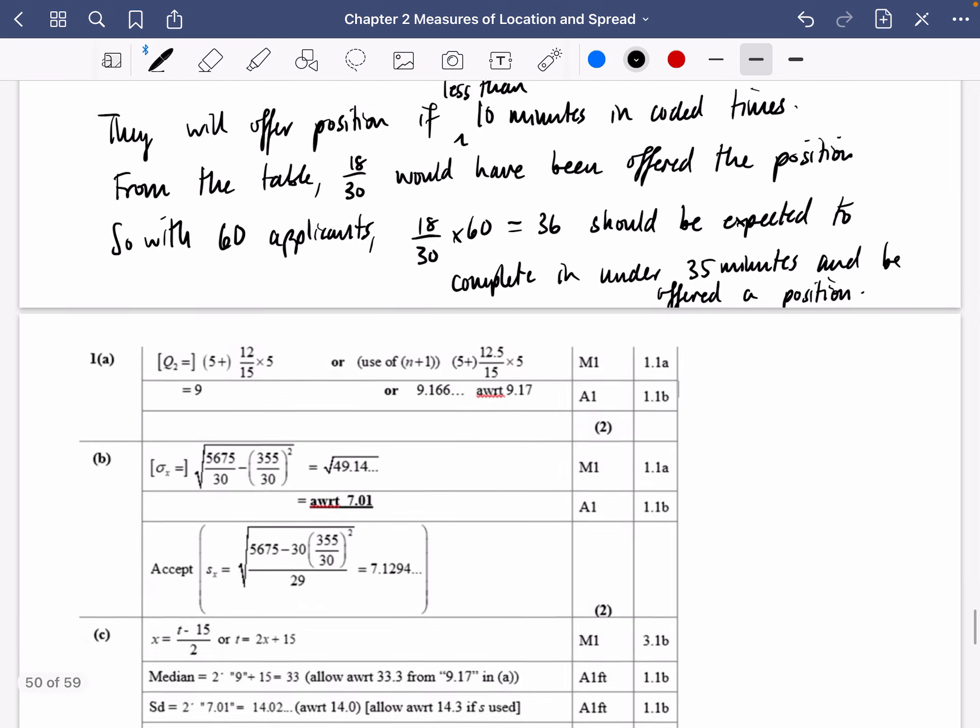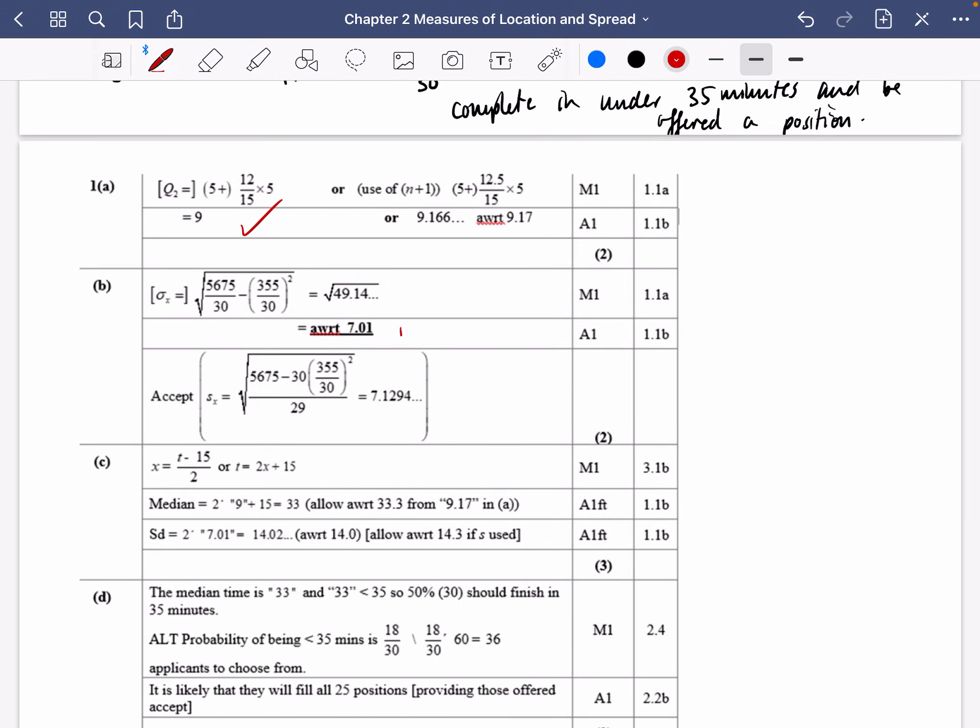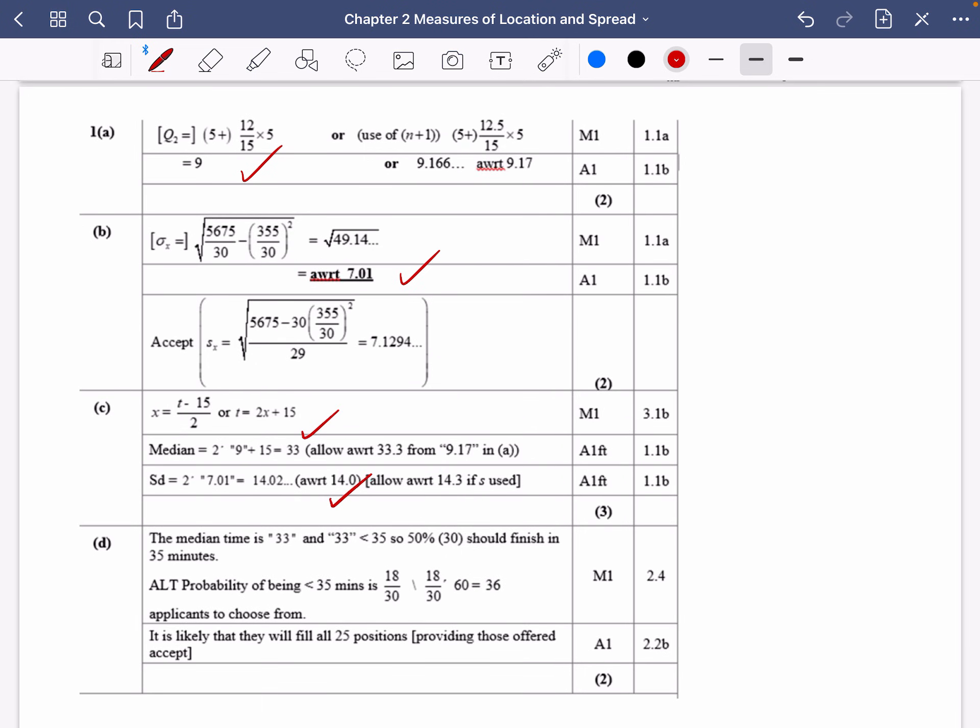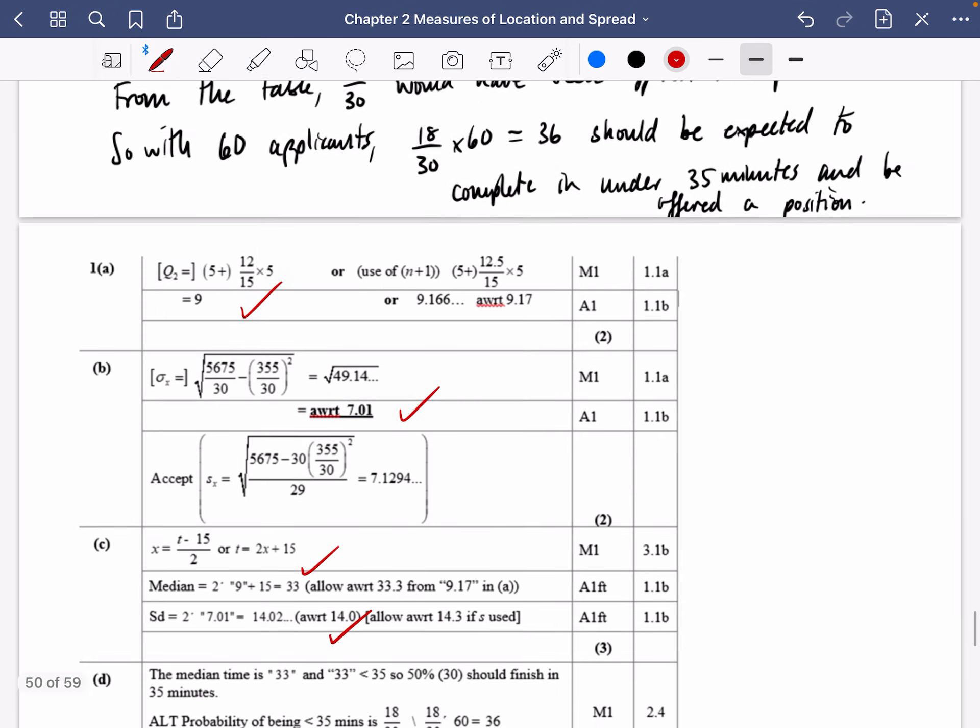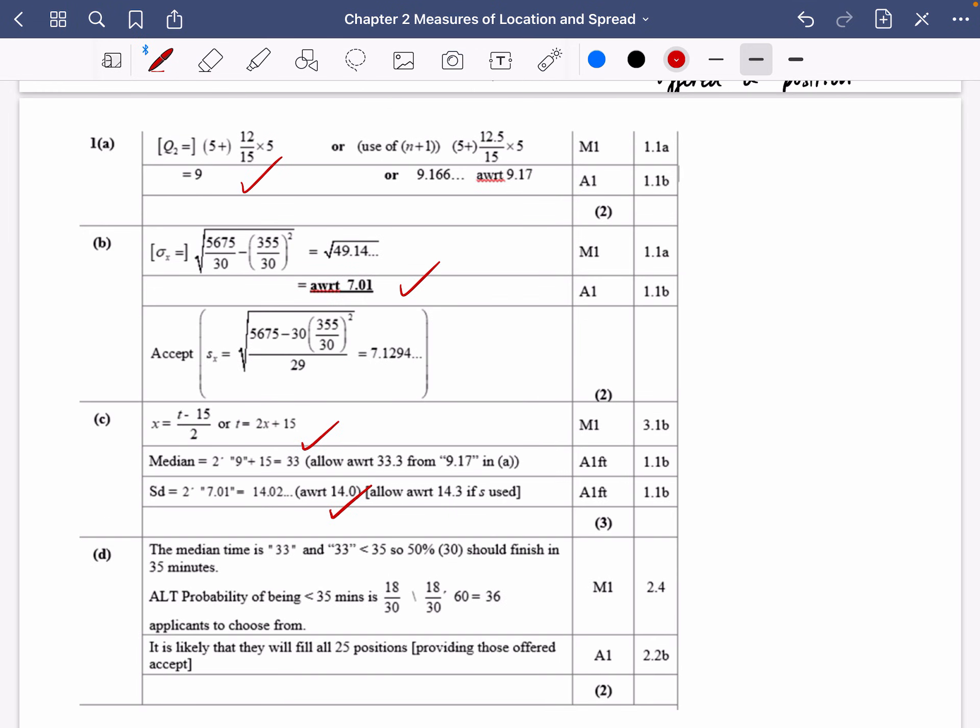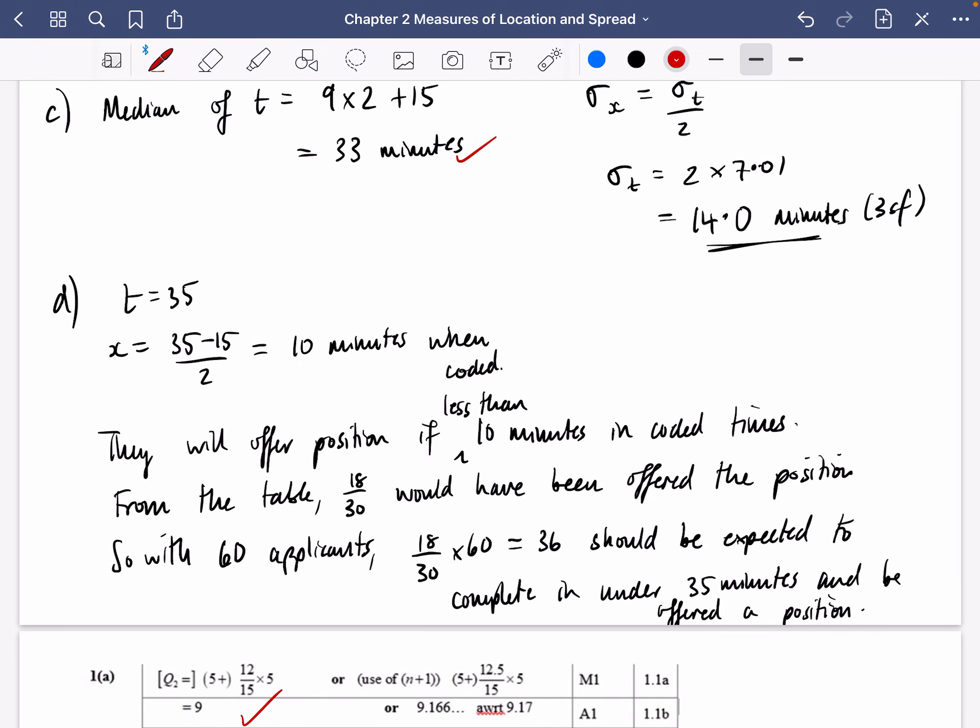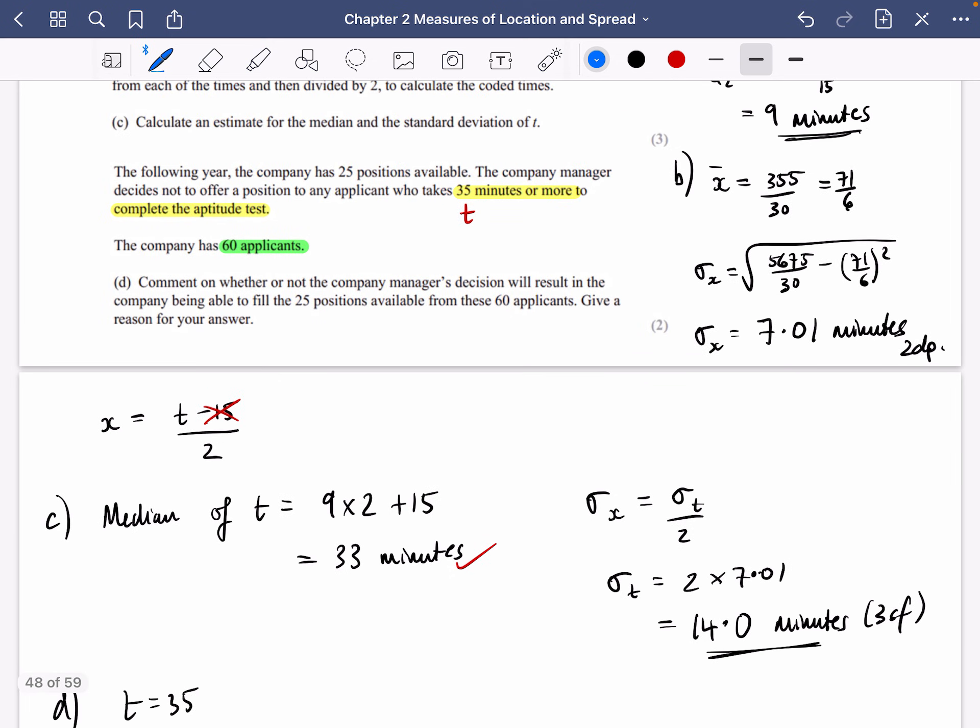Okay, let's have a look and see if we've got all of this right. So we've got the answer here of 9 for the median and 7.01. And then we've got the 14 and we've got the 33 for the median. Good. And then for the last bit, so less than 35 minutes is 18 over 30. So 36 applicants. So it's likely that they will fill all 25 positions. I don't know if I got that mark because it said, will they fill those 25 positions? So I said 36 should be completed. I think I should say, so they will likely fill the positions. I didn't answer the question. They will likely fill the 25 positions. I didn't answer it. So you need to make sure that you actually answer what it is that they're asking for there.